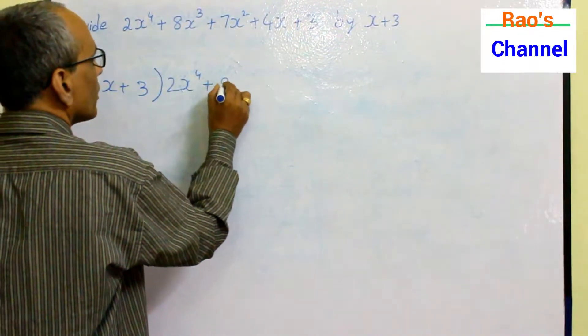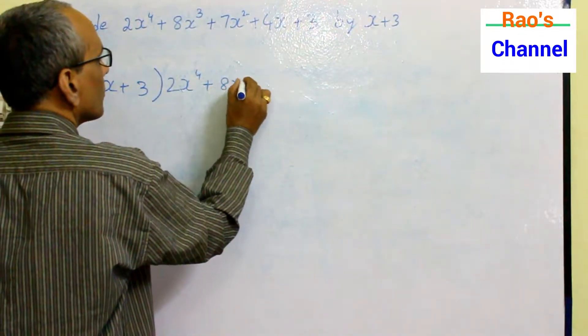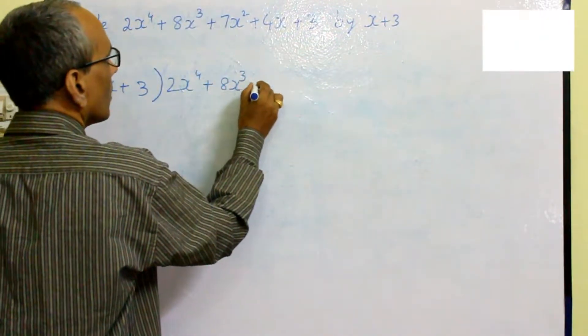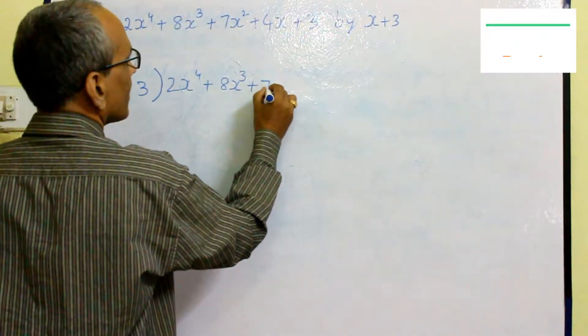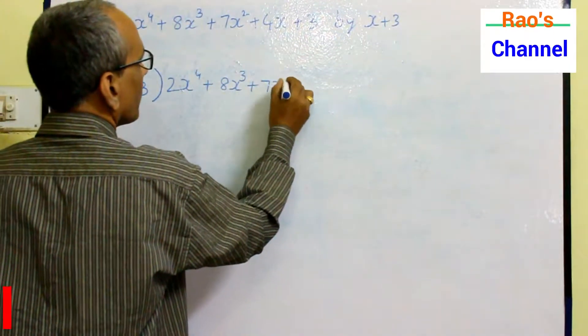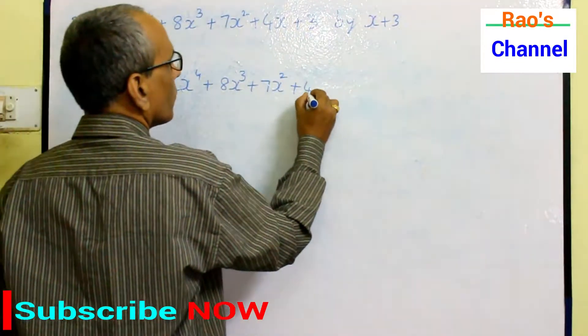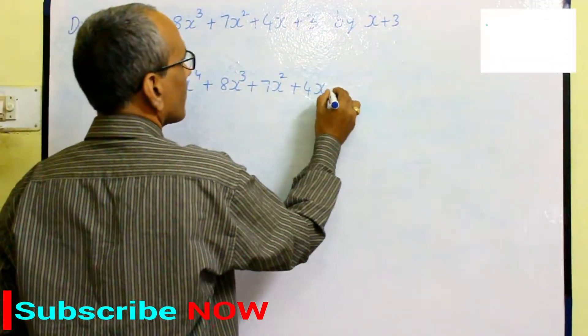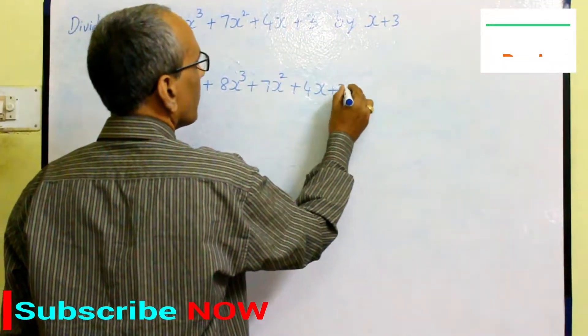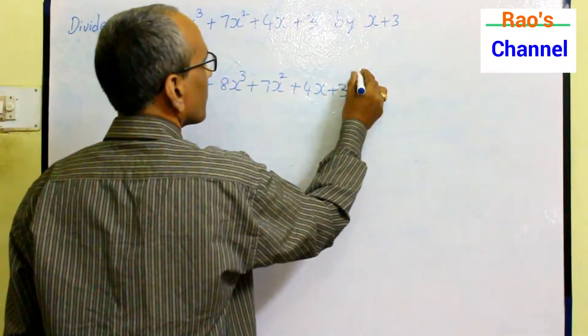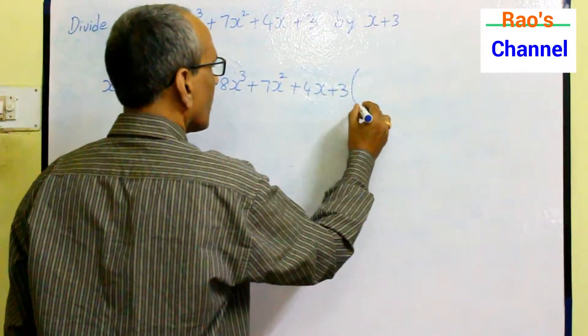In this question, the dividend part is already in descending order according to the power of the variable: x⁴ (4th degree), 3rd degree, 2nd degree, 1st degree, 0 degree. So it is already in order. If not, you have to arrange it in order. The divisor is x+3 and the dividend is 2x⁴ + 8x³ + 7x² + 4x + 3.